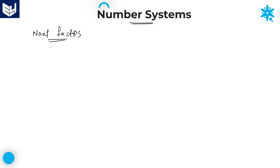First, let me explain how to find the number of factors. This is a very important concept. Based on this number of factors, number of ways will depend. Once you know how to calculate number of factors of any number, it is very easy to calculate the number of ways of expressing the given number as a product of two factors or two different factors.